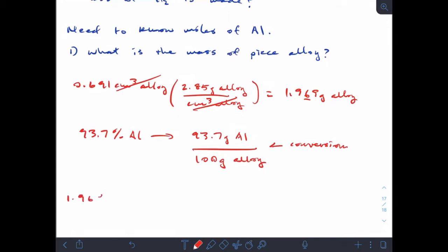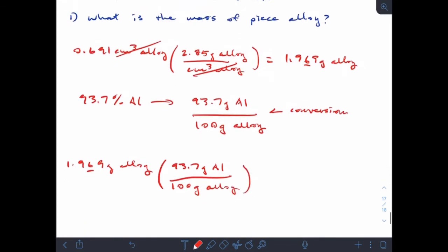That's going to get me to grams of aluminum. So 1.969 grams of alloy times 93.7 grams of aluminum per hundred grams of alloy. My grams of alloy cancel, leaving me with 1.845 grams of aluminum. Again, tracking and keeping track of my sig figs at each step.